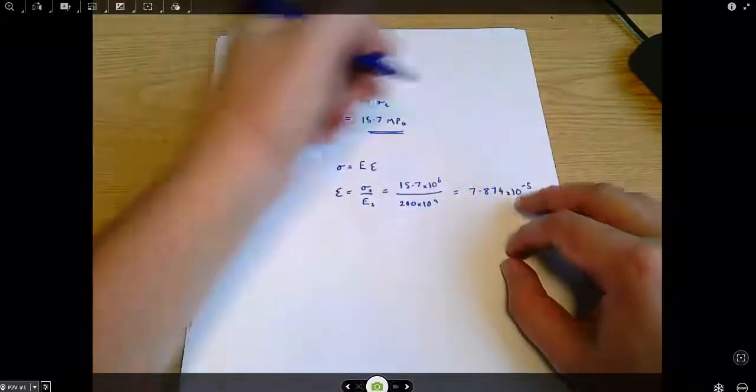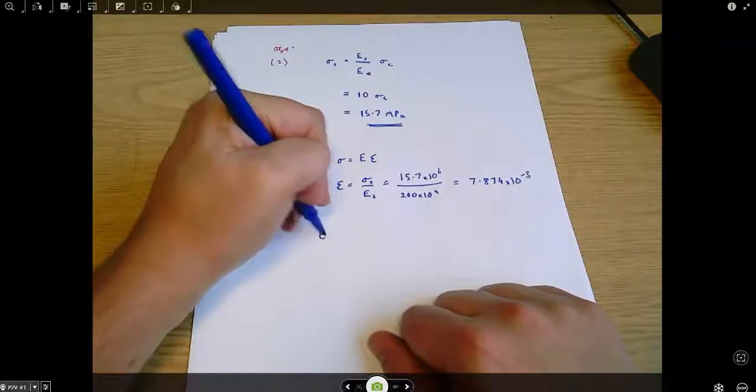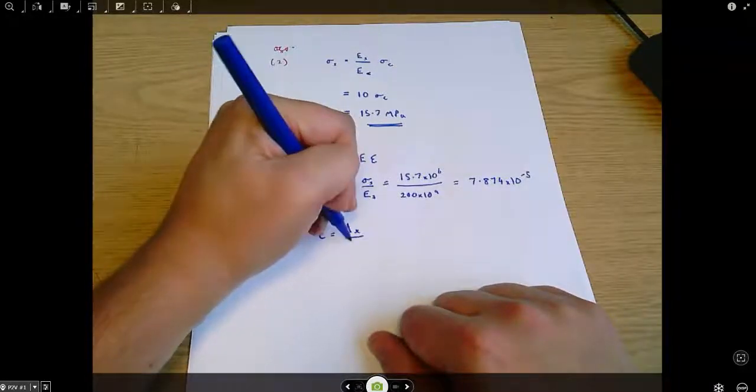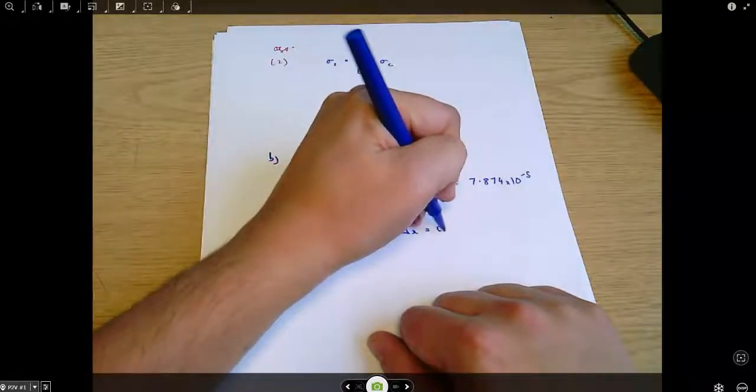Don't need units because it's a strain which is dimensionless. And then we can say strain is defined as the change in length divided by the original length. So the change in length is the strain times the original length.